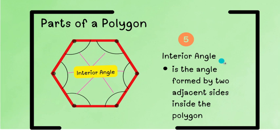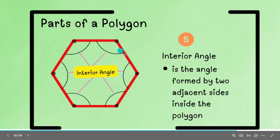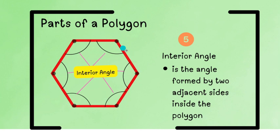Then, we have the interior angle. So, ang interior angle ay na-perform siya by two adjacent sides inside the polygon. So, let's say, this is one side and this is another side. They are adjacent, magkatabi sila. Now, if these two sides nag-intersect siya sa isang common point, they form an angle. And, the location of the angle is inside the polygon. That is why they are called interior angles. Kung makita natin dito, nasa loob lahat ng interior angles. Kaya, ang tawag sa kanila interior from the word itself.